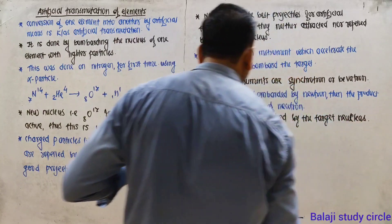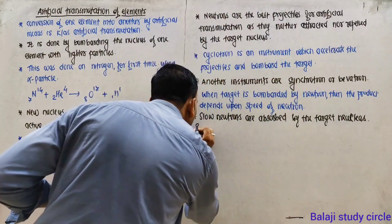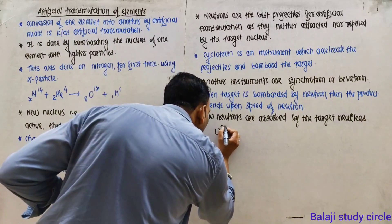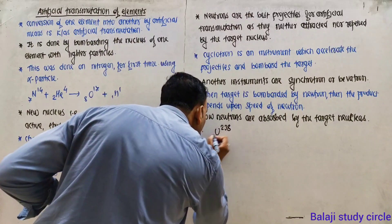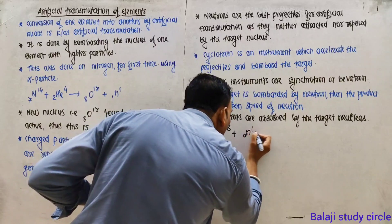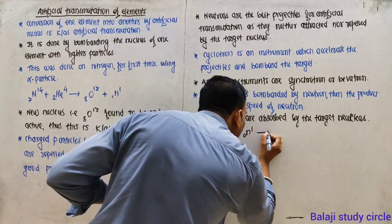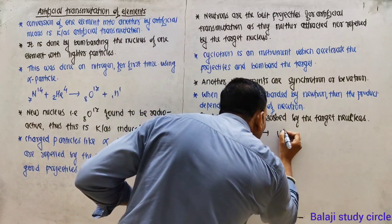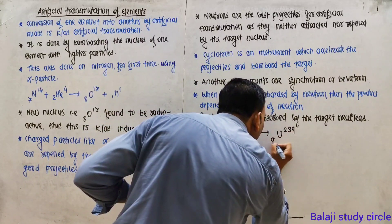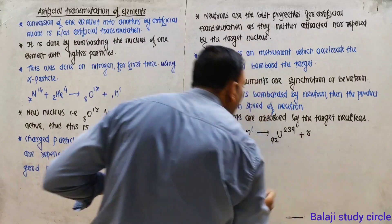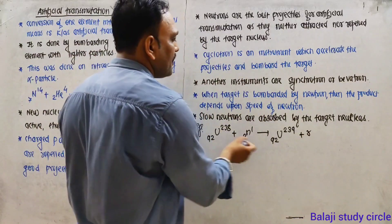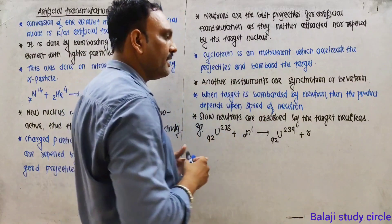For example, uranium-238, when bombarded with a slow neutron, gives uranium-239 accompanied by the release of radiation. In this case the neutron is absorbed by the nucleus.